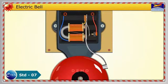When the electromagnet pulls the iron strip, it breaks the circuit. As a result, the current stops flowing through the coil. The coil is no longer an electromagnet.